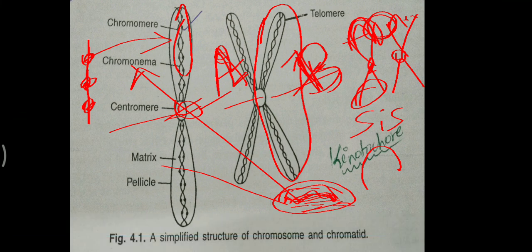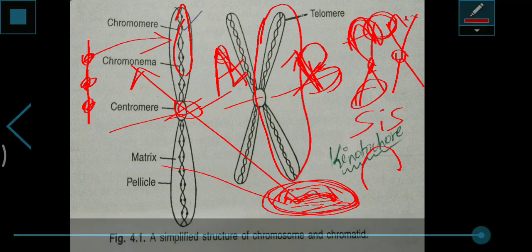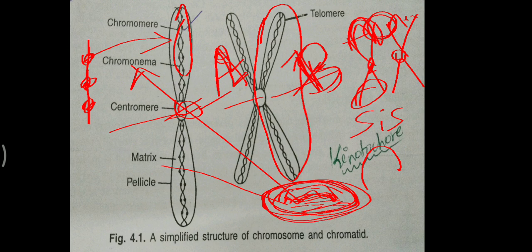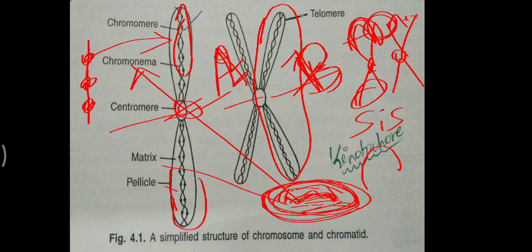The matrix is enclosed by a sheath which is known as pellicle. The covering sheath of the chromosome structure is known as pellicle. Both matrix and pellicle are non-genetic materials — this is the main important point: matrix and pellicle are non-genetic materials present in the chromosomes.